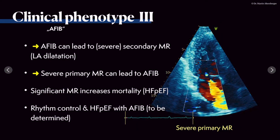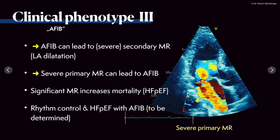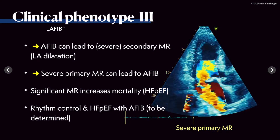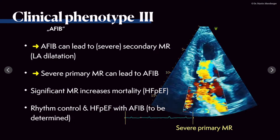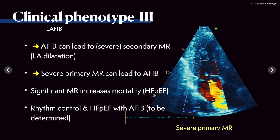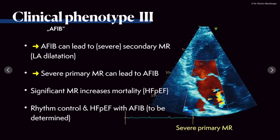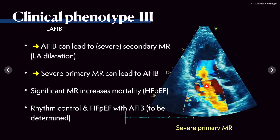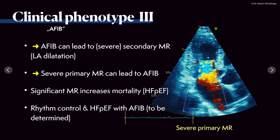We are not done yet with atrial fibrillation, because AFib can also lead to severe secondary mitral regurgitation. In the case of a dilated left atrium, we can have severe mitral regurgitation. You have to differentiate between secondary mitral regurgitation due to LA dilatation or left ventricular dilatation, and differentiate it from severe primary MR. This is a patient with an example of severe MR due to a primary cause — this patient had a prolapse and a partial flail leaflet.